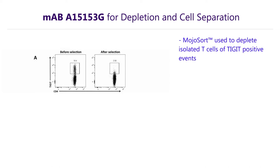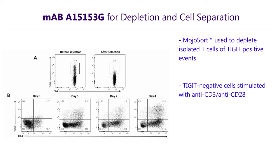We then studied TIGIT upregulation by culturing the T-cells over 4 days with anti-CD3 and anti-CD28 antibodies. TIGIT was upregulated starting on day 1 and increased by day 4. In comparison, PD1, another checkpoint marker, was upregulated in a quicker manner and by a greater percentage of T-cells.